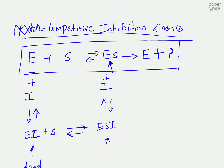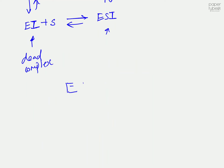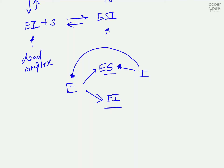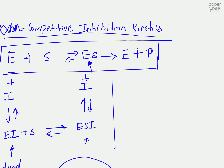One more thing that can happen is that the enzyme-inhibitor complex can associate with substrate to again form the enzyme-substrate-inhibitor complex. So in summary, the inhibitor can associate with both the free enzyme and the enzyme-substrate complex, and the substrate can also associate with the enzyme-inhibitor complex. All of these associations are instantaneous, and regardless of this inhibition mechanism, the rate of reaction still depends on the concentration of the enzyme-substrate complex.